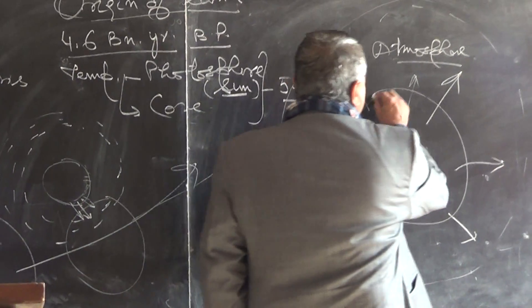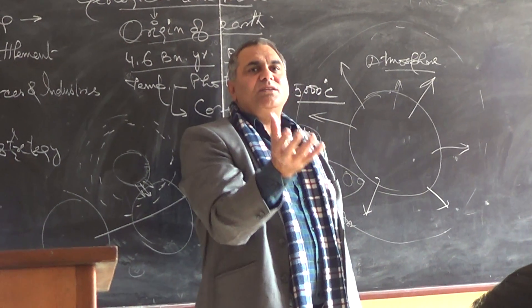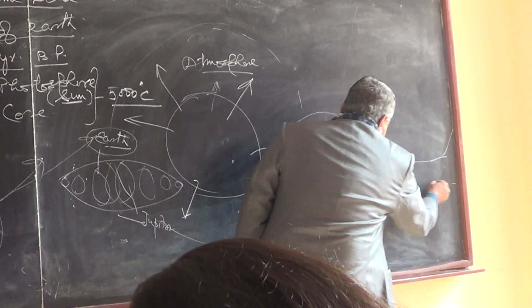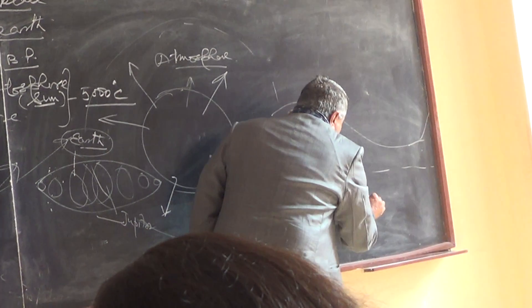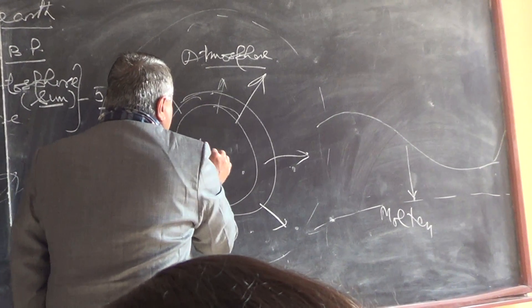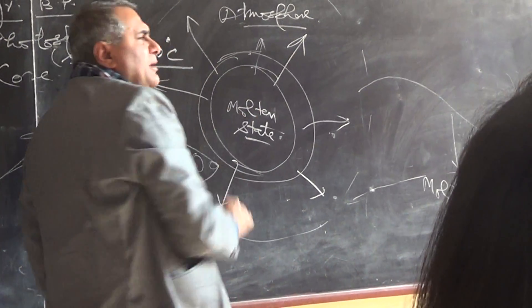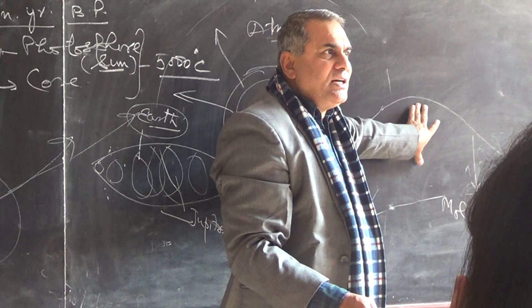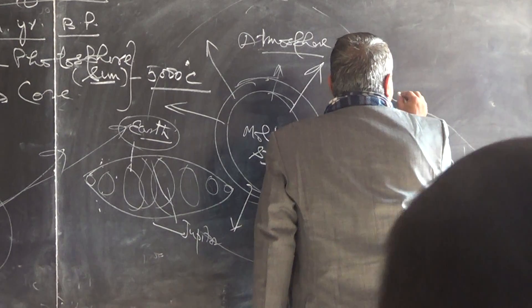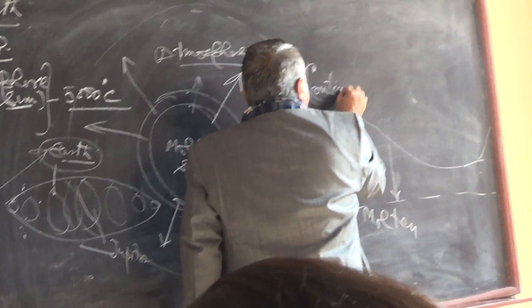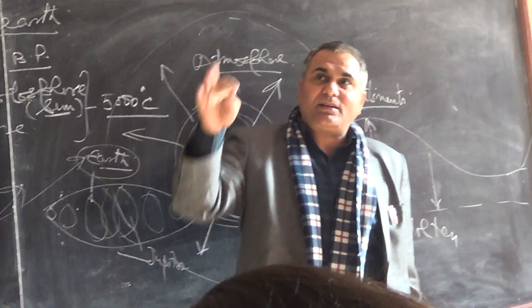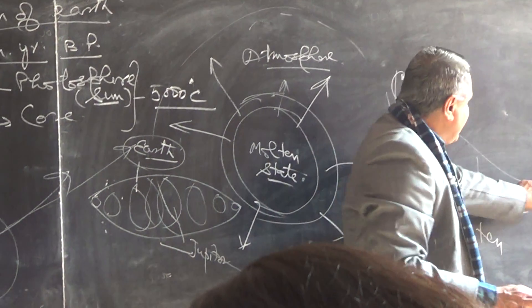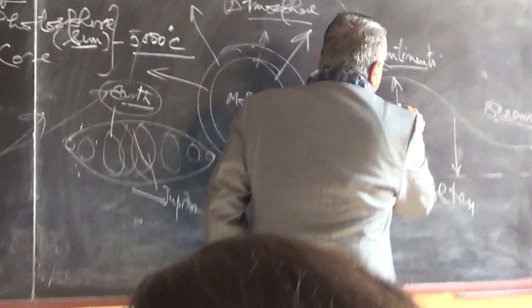Some areas of the crust released heat at a very fast speed, while some areas released heat at very slow speed. The interior of the Earth is still in a molten state. Areas that released heat faster had elevated mass and were converted into continents. Areas that released heat at very slow speed became low-lying areas and were converted into ocean basins.